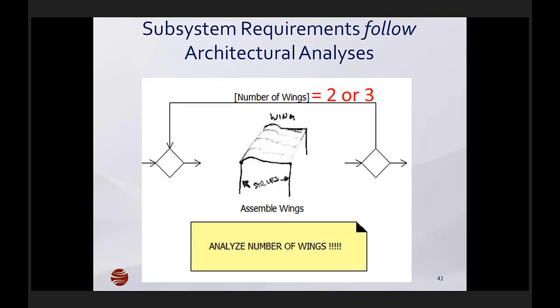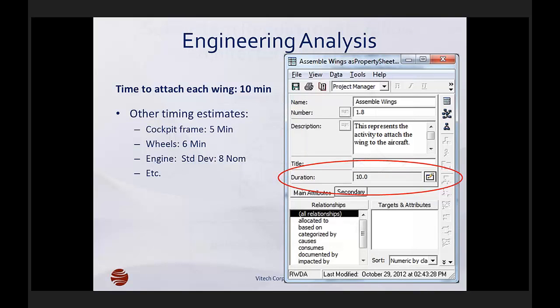We're going to start by looking at the three-wing triplane architecture. The first architecture will have the assembler installing three wings. Once we know how many wings we're going to install, we need to define how long it will take to install each wing — we have to assign times for every step in the activity diagram. We can assign an estimated time to perform every one of those steps by simply defining a duration to each of those activities on the diagram. I've assigned time durations to each step in the model: wheels can be attached in six minutes, and it takes ten minutes to attach each wing.